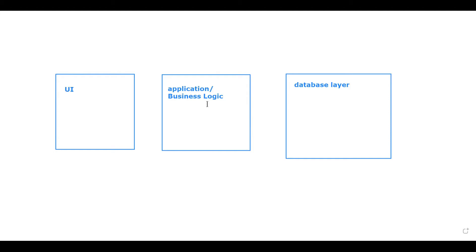These software architectures could be one-tier, two-tier, or three-tier. In one-tier architecture, all three layers — UI, business logic, and database — are packed as one unit in one system only. This is called one-tier.